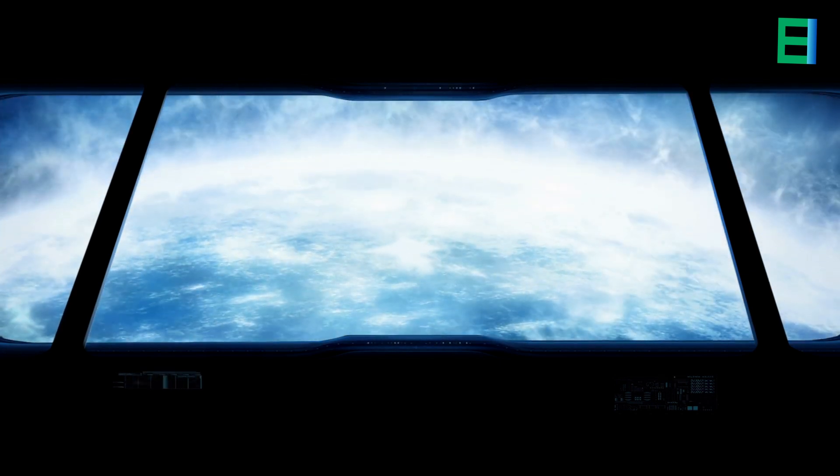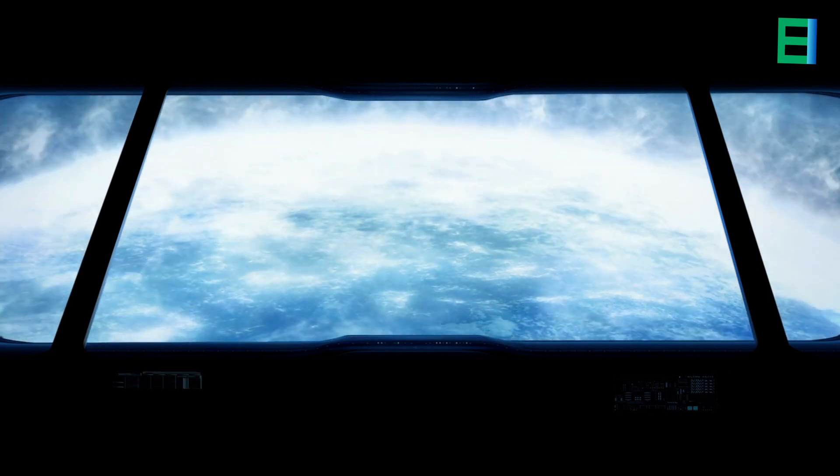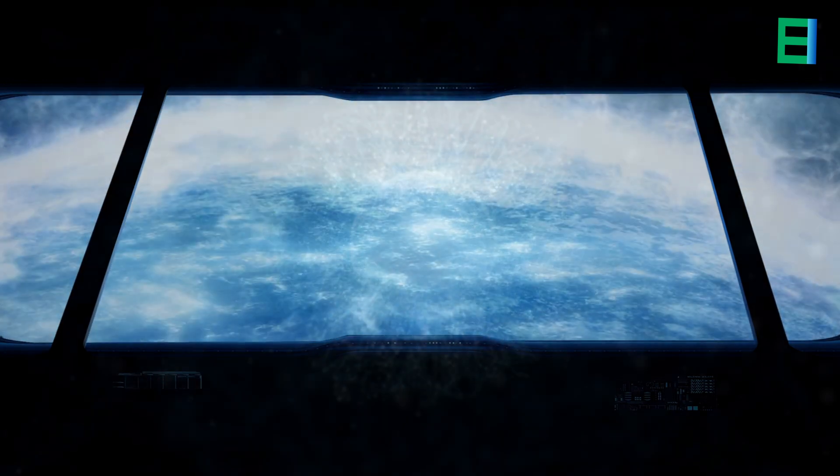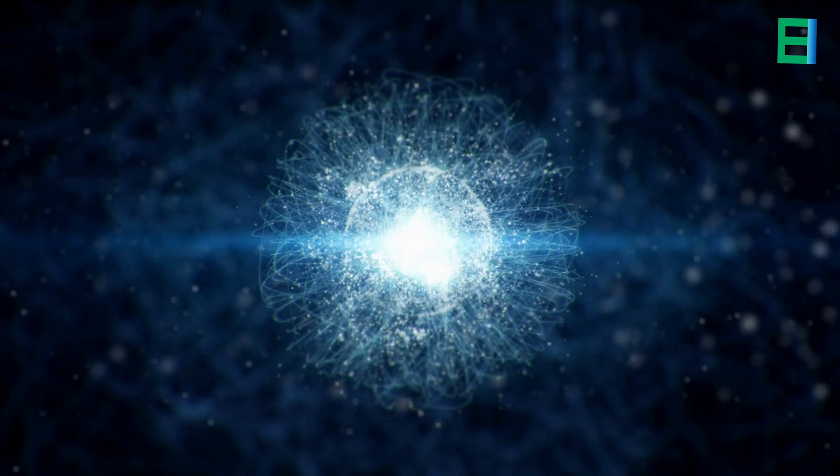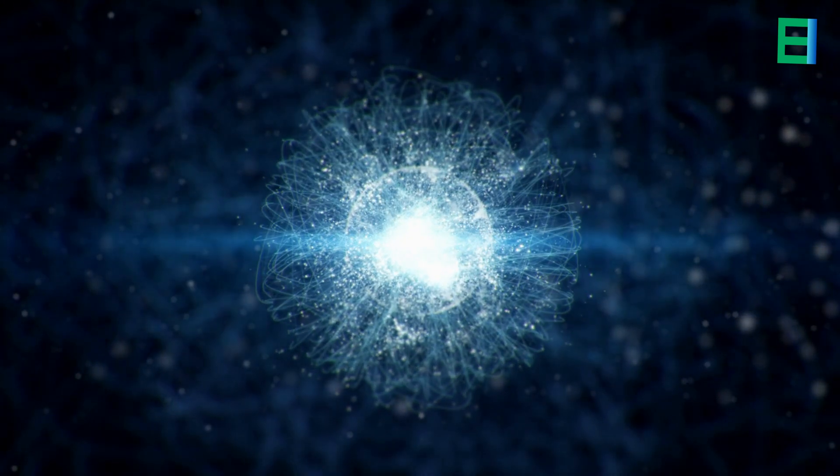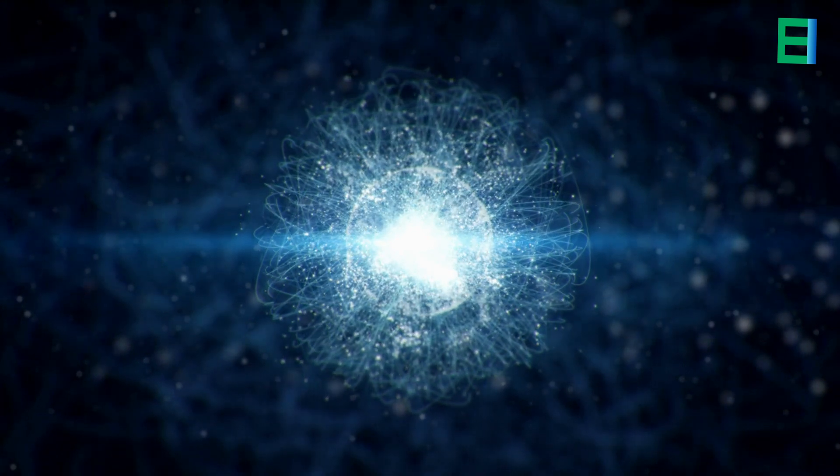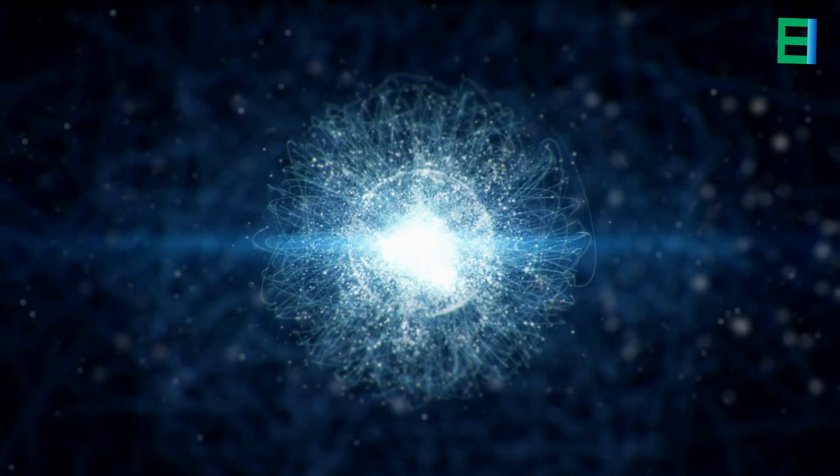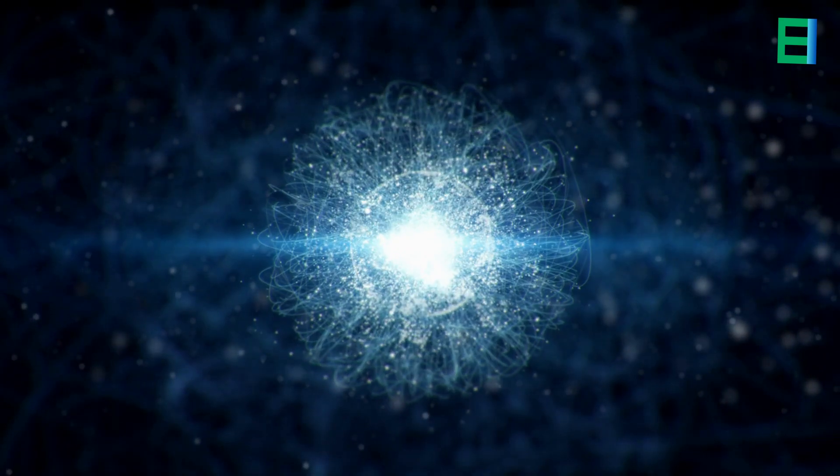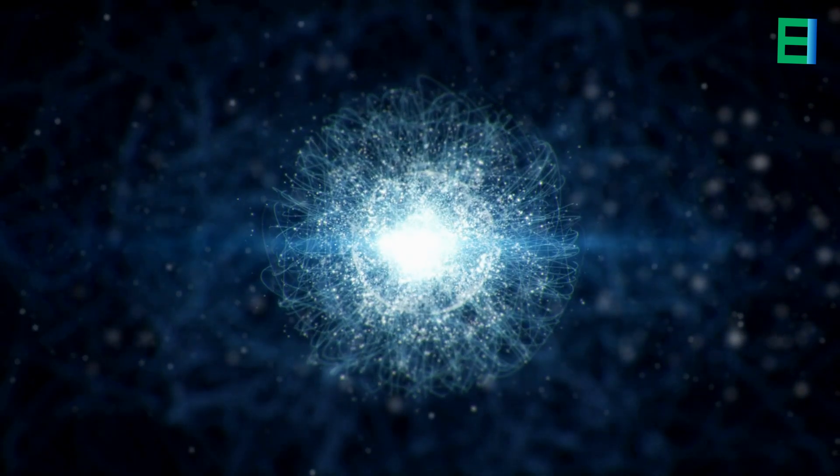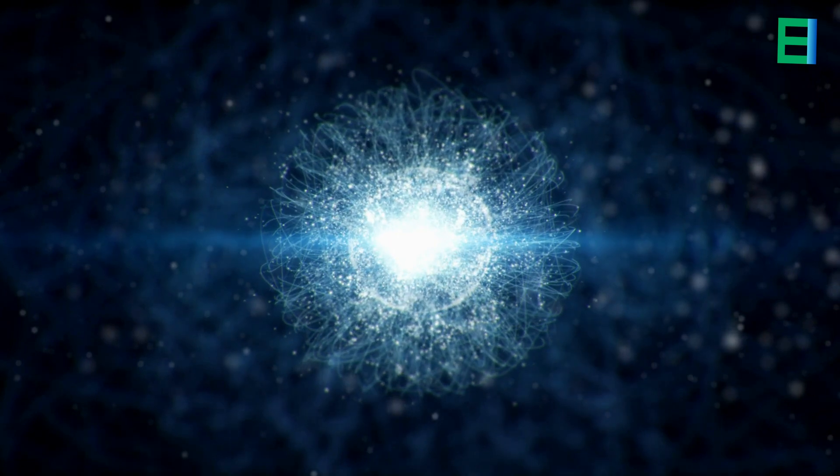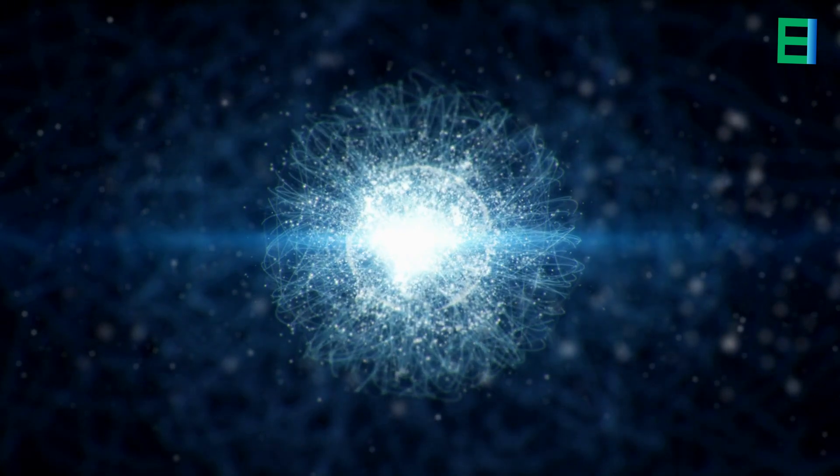Due to its close proximity to the sun, Mercury experiences intense solar radiation and high temperatures. These extreme conditions cause the atoms and molecules in the exosphere to move rapidly, leading to their escape into space. As a result, the exosphere is continuously replenished by the release of volatile materials from Mercury's surface and the interaction with the solar wind.